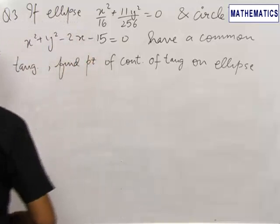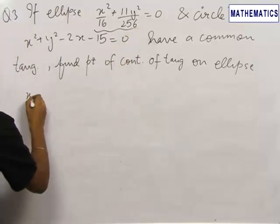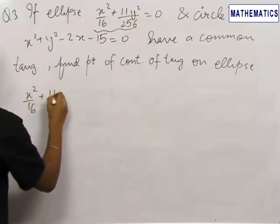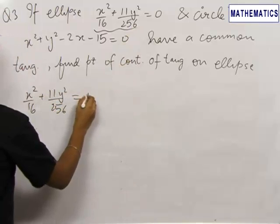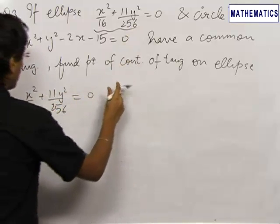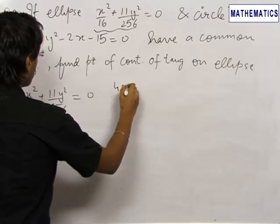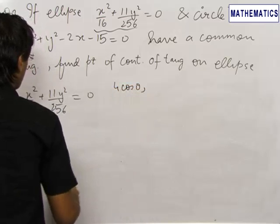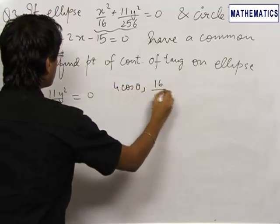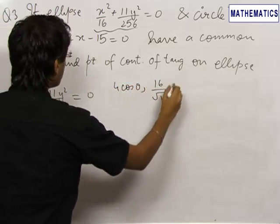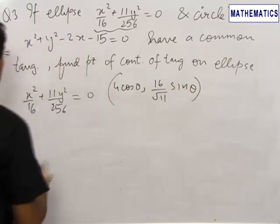We have the ellipse x²/16 + 11y²/256 = 0. Any general point on this ellipse will be (4 cos θ, 16/√11 · sin θ).